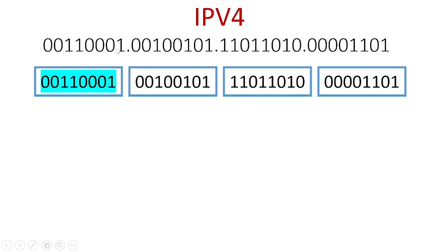For an IPv4 address, there are 8 bits per octet. We can see how to convert and find the difference between IPv4 and IPv6, and how to convert values using a formula.